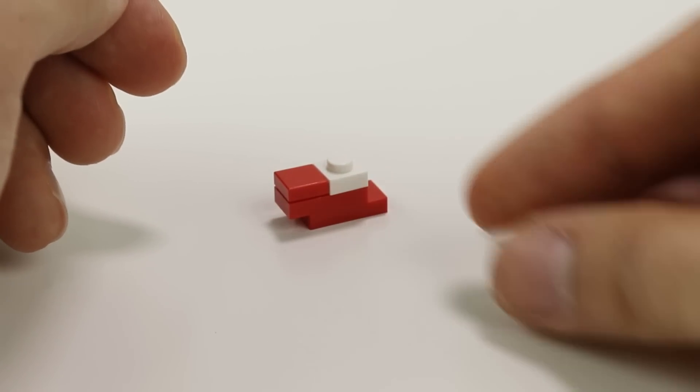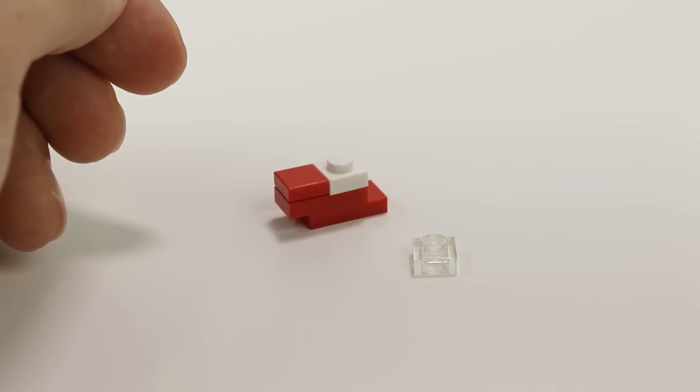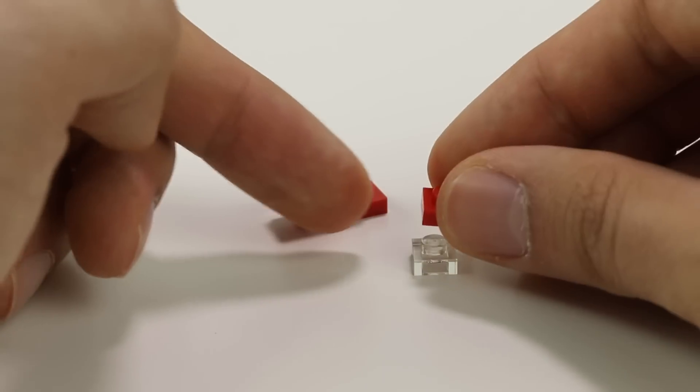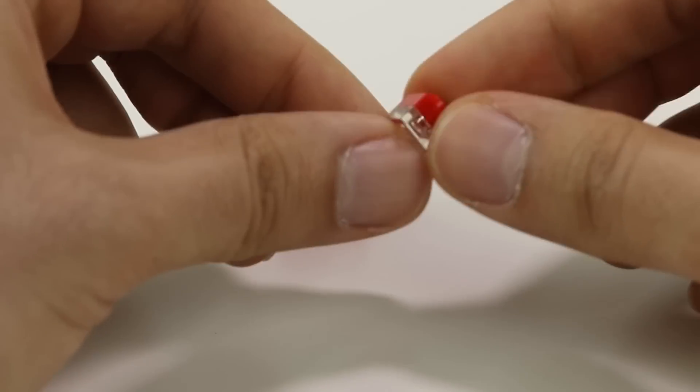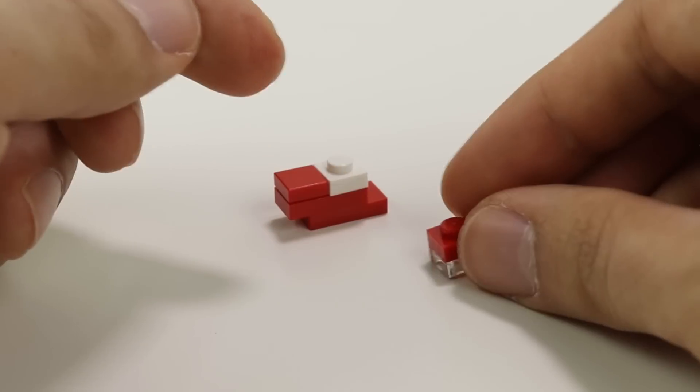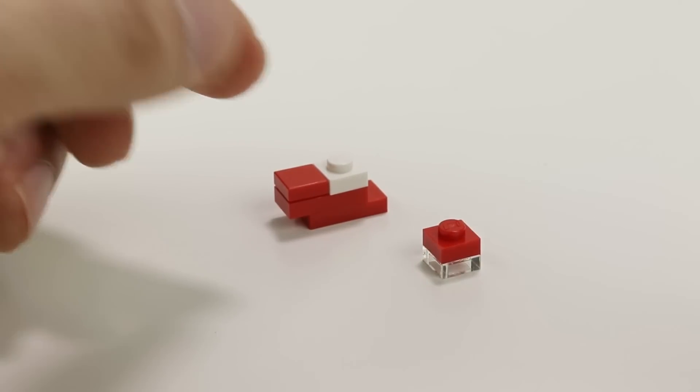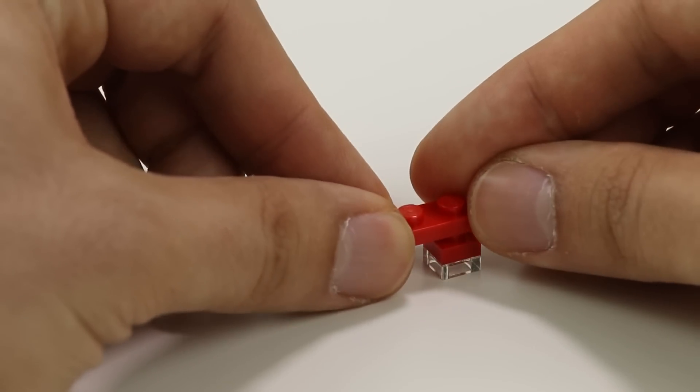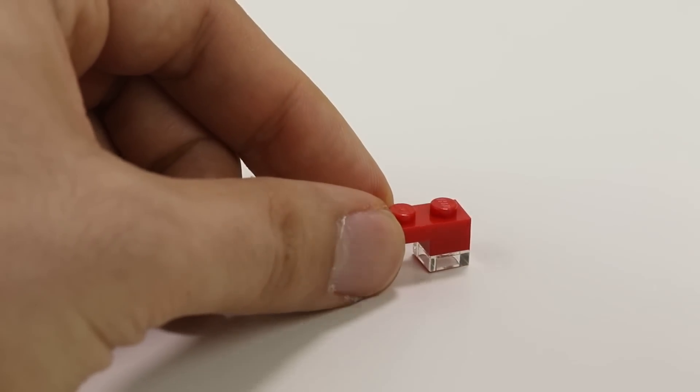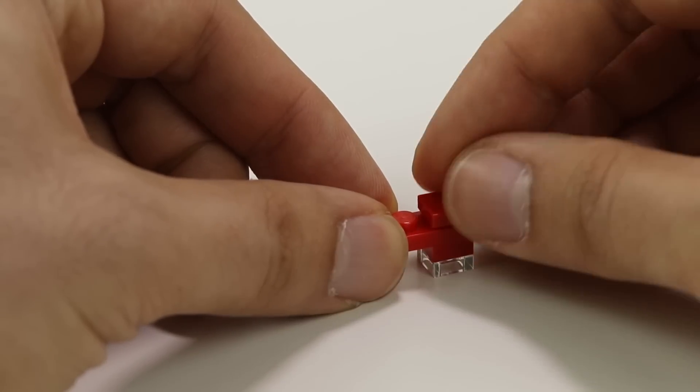The second foot starts with a 1x1 clear plate, and we're going to put a 1x1 red plate on top of it. You can line those up so that they are sitting flush in terms of the sides. On top of that, we're going to add a 1x2 red plate and a 1x1 red tile.